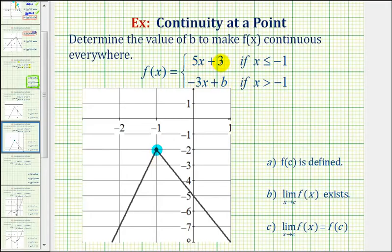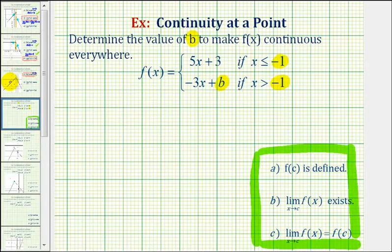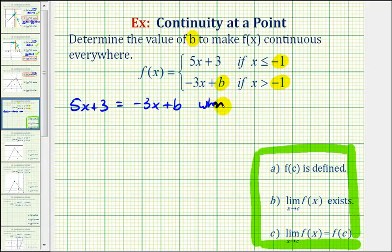When x equals negative 1, 5x plus 3 must equal negative 3x plus b. Again, in order for this function to be continuous everywhere, 5x plus 3 must equal negative 3x plus b when x equals negative 1.